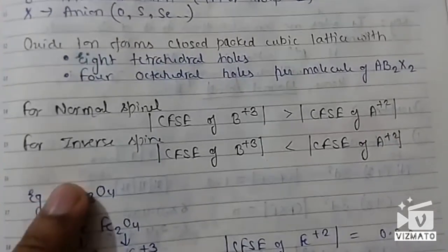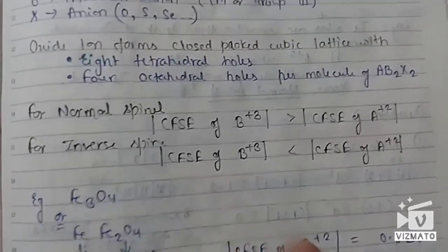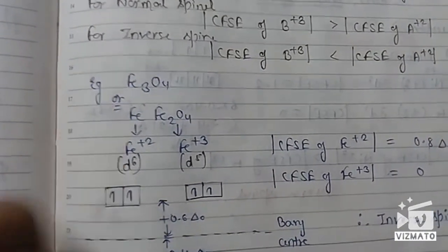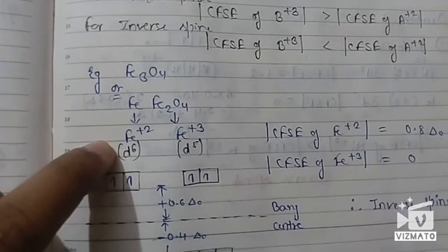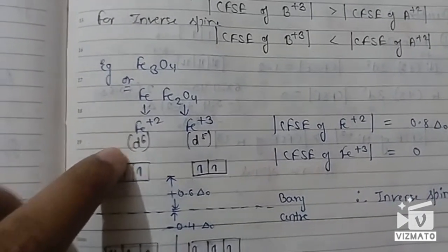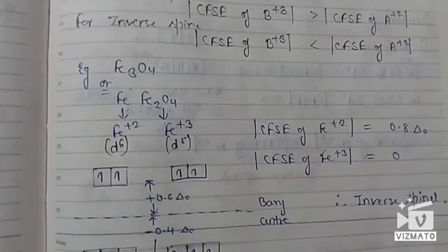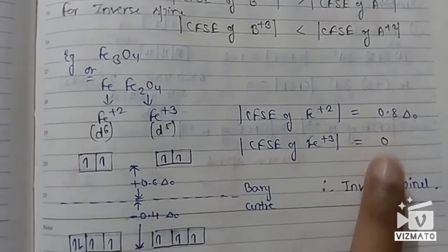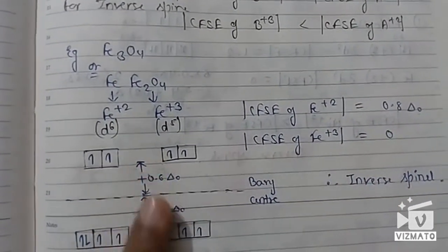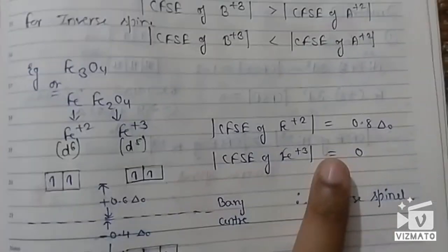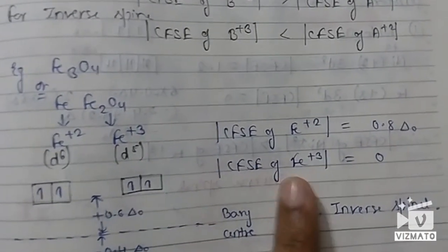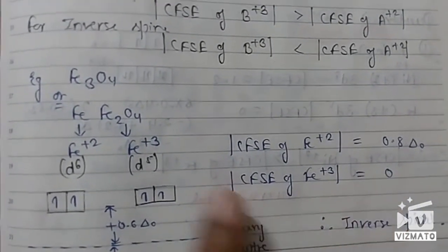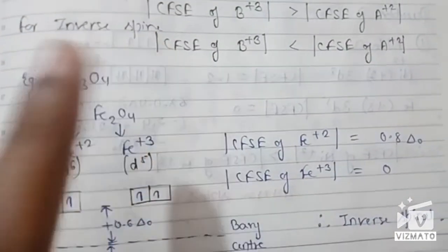If the CFSE for the +2 cation is greater, then this is an inverse spinel. In this case, the CFSE for Fe²⁺ — which is d⁶ configuration — would be 0.8 Δₒ, and for Fe³⁺ — which is d⁵ — it would be 0. Hence the |CFSE| for the +2 cation is greater than the |CFSE| for the +3 cation, so Fe₃O₄ would be an inverse spinel.